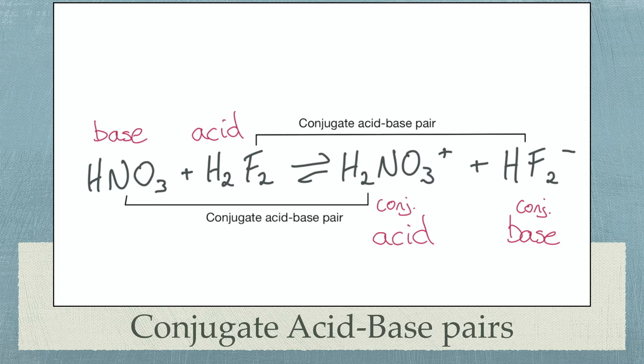Let's look at another example. Step 1. Write out the reactants. HNO3 is a strong acid that we have learnt of. Therefore H2F2 is a base. Step 2.